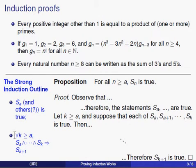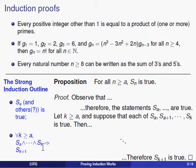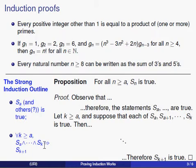Here's where you modified the argument. Instead of showing that S(k) implies S(k+1), you showed that if S(k) and all the previous statements were true, then S(k+1) would be true as well. You were allowed to use any particular combination of these previous statements to prove that S(k+1) is true.